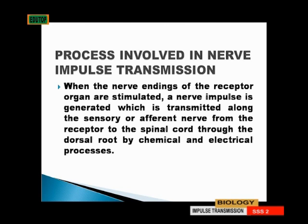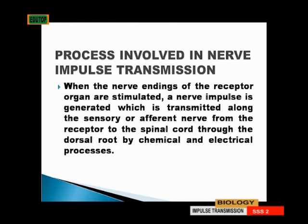The process involves nerve impulse transmission. When the nerve endings of the receptor organ are stimulated, a nerve impulse is generated which is transmitted along the sensory or afferent nerve from the receptor to the spinal cord through the dorsal roots by chemical and electrical processes.